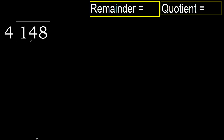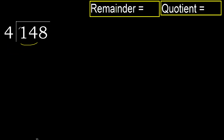148 divided by 4. 1 is less, therefore next. 14 is not less, therefore with 14. 4 multiplied by which number is nearest to 14.